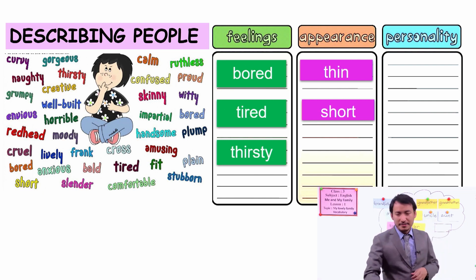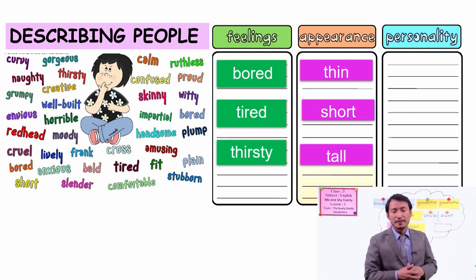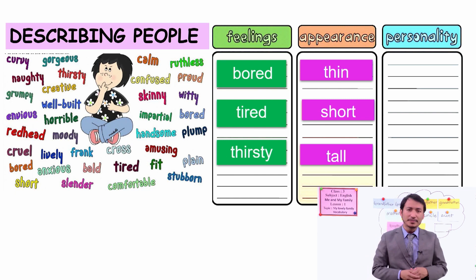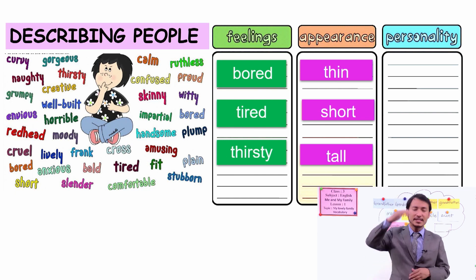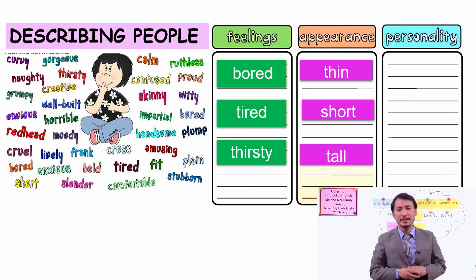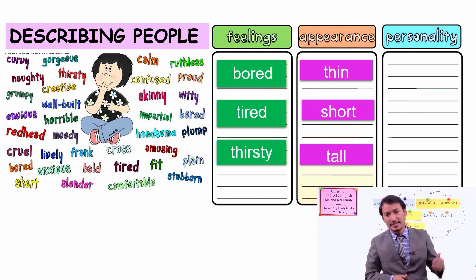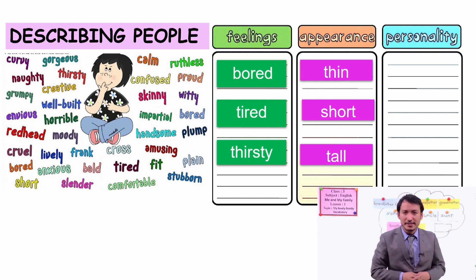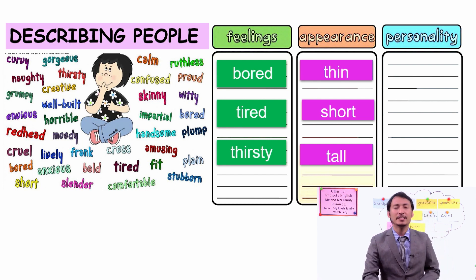Another one is tall. Tall means having better height than others. So these are the appearance describing words.